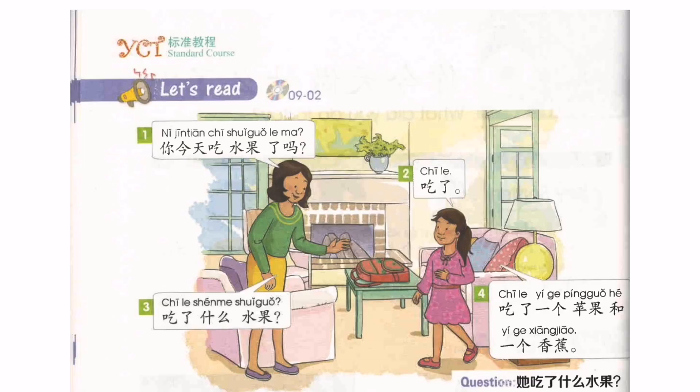Let's read! 你今天吃水果了吗？吃了。吃了什么水果？吃了一个苹果和一个香蕉。